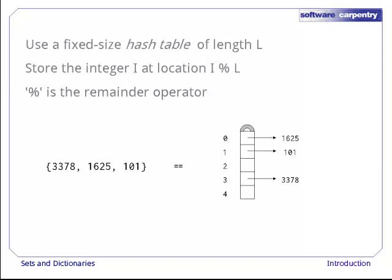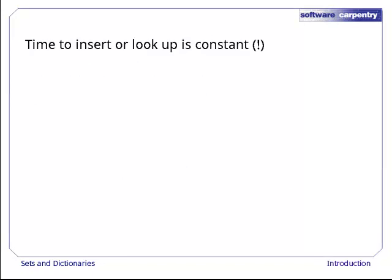Here's an example. Our list has 5 slots with indices from 0 to 4. Since 3378 mod 5 is 3, we store 3378 in the third place in our list. 1625 goes in slot 0, since 1625 mod 5 is 0, and 101 goes in slot 1. So far, so good. To add or find a value, we do one simple bit of arithmetic and look in exactly one place, regardless of how big the set is.